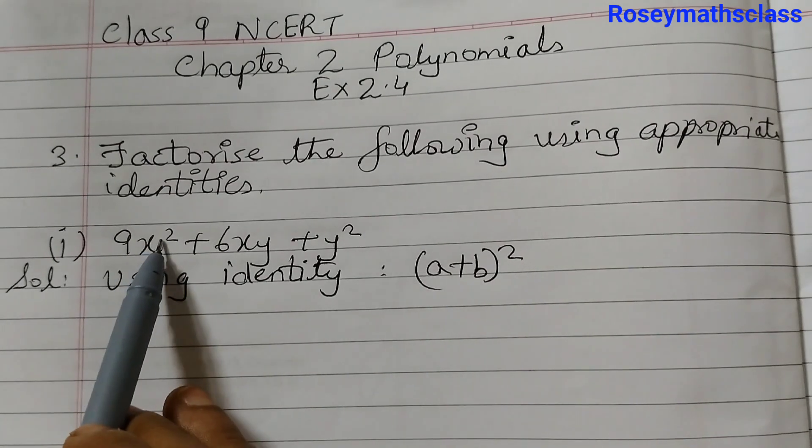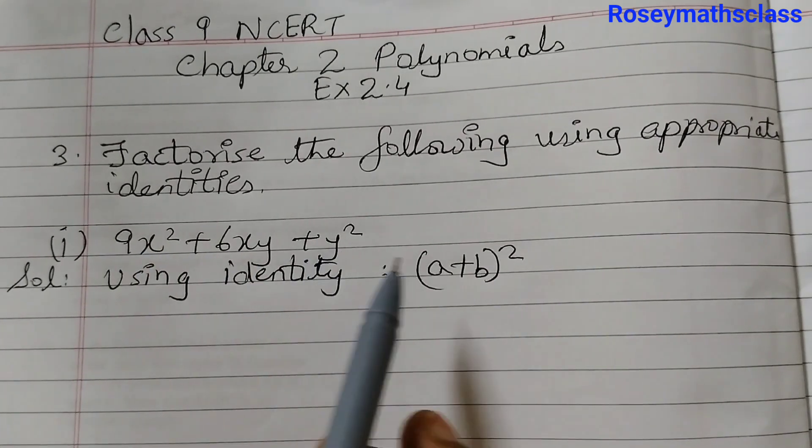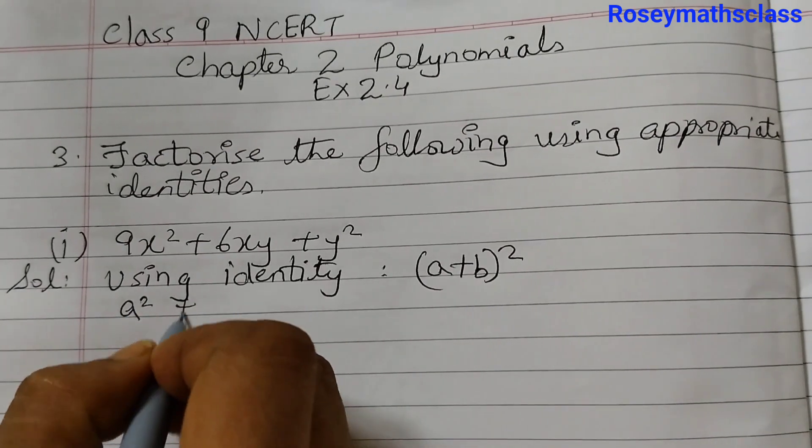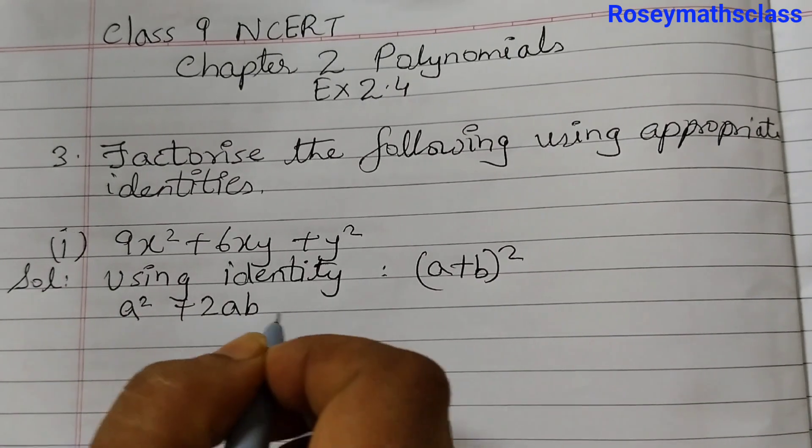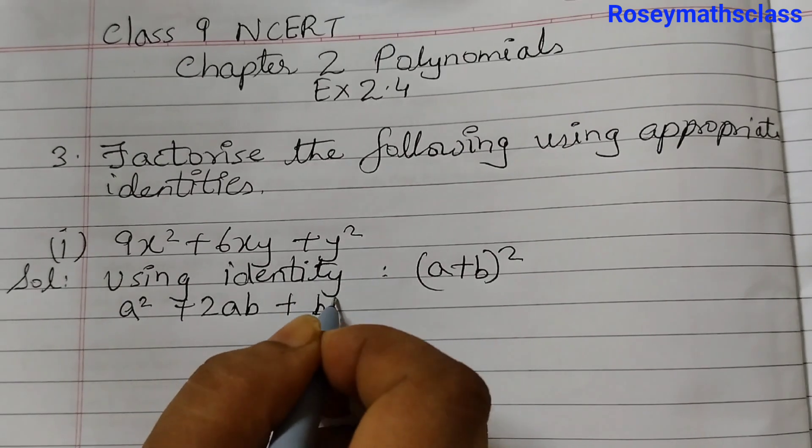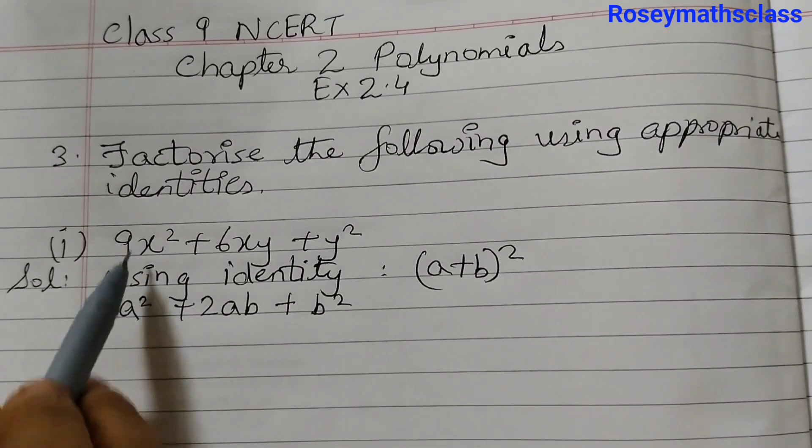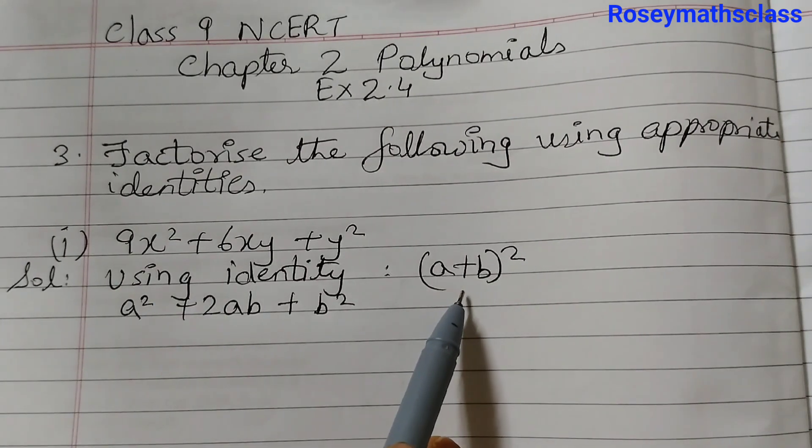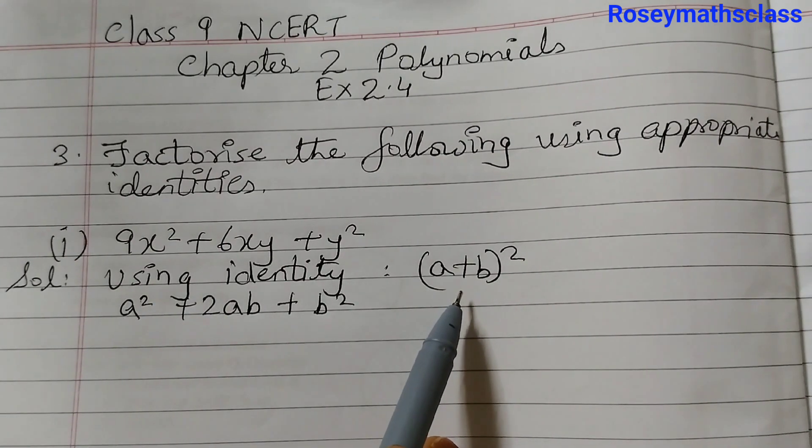Also there is a square here and there is a square here. So a plus b whole squared equals to a squared plus twice ab plus b squared. Now compare these and we need to get it in this form. These are the factors.